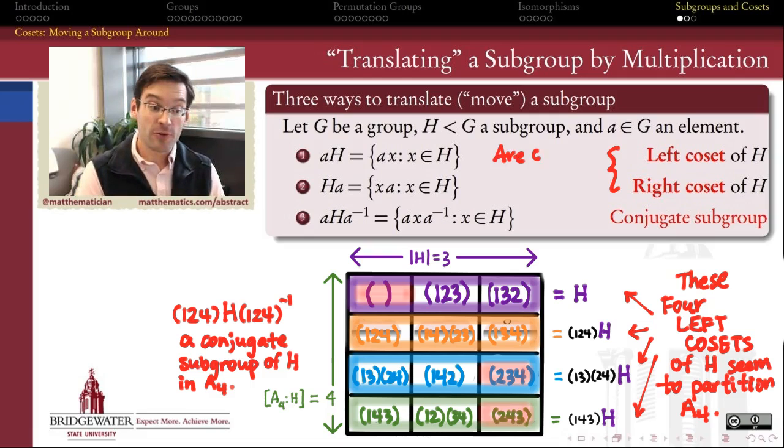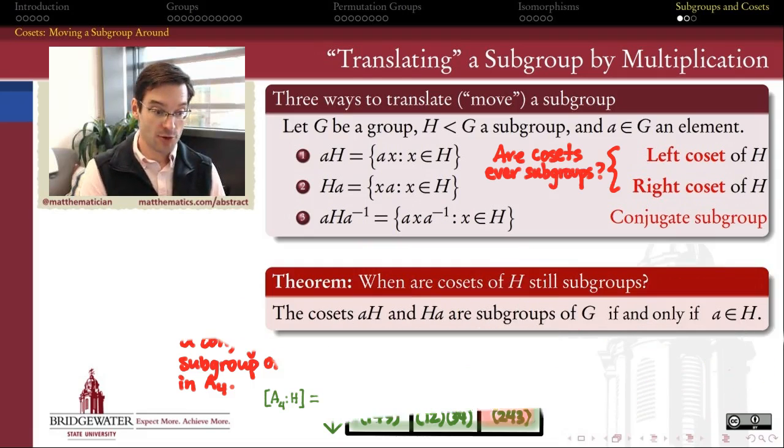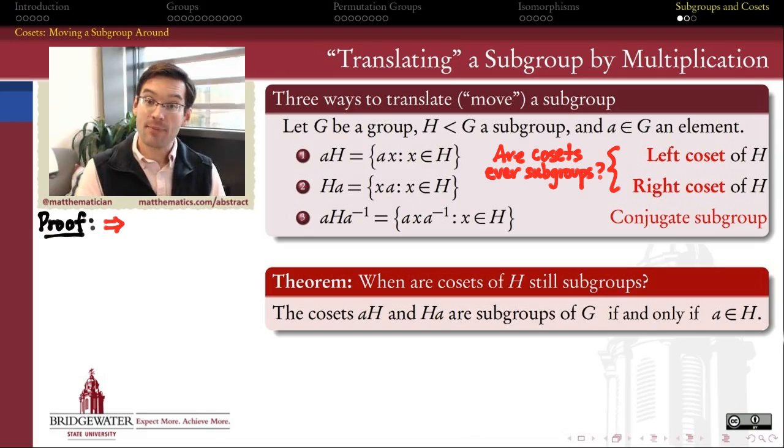And so the first thing I want to prove is that in general, left and right cosets are probably not themselves subgroups of the larger group. That the only time that they are is when we are acting on the left or acting on the right by an element which already belonged to the subgroup.